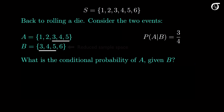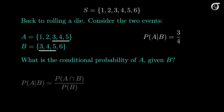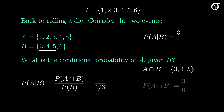Working through the formula will yield the same probability, and let's see how that works. The conditional probability formula tells us that the conditional probability of A given B is the probability of their intersection over the probability of event B. The probability of event B is simply 4 over 6, since we're dealing with equally likely sample points. A intersect B is the numbers 3, 4, and 5, since those occur in both A and B. The probability of the intersection is 3 out of 6, and thus the probability of A given B is 3/6 over 4/6, which is 3 quarters.